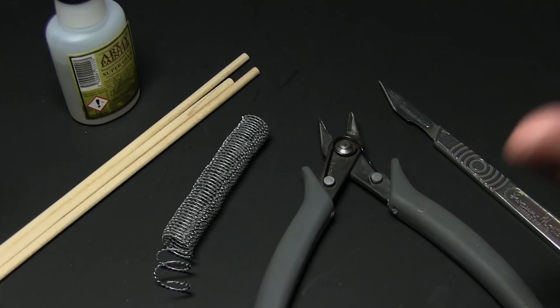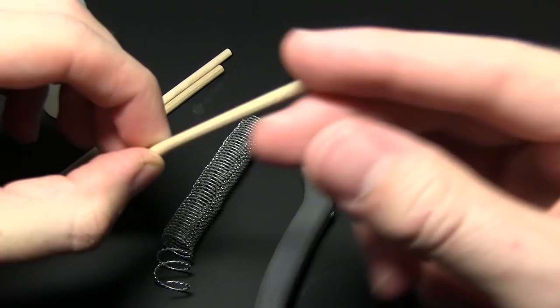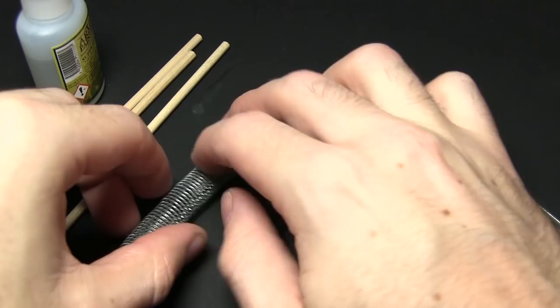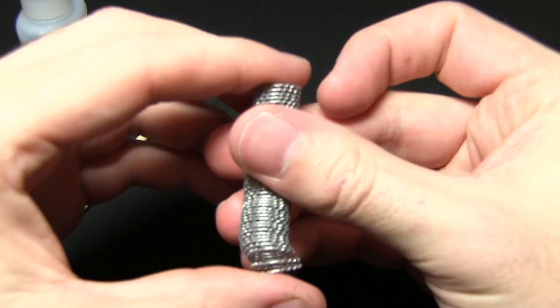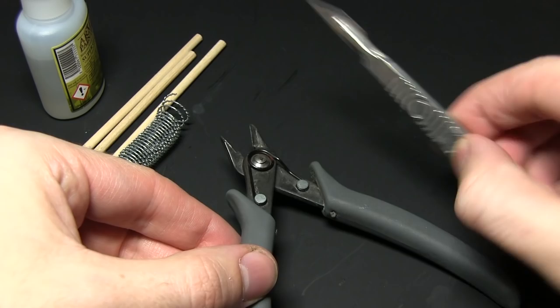For this tutorial you will need the following items: super glue, some wood dowels about 4mm in diameter, and some barbed wire, which is available from most hobby stores and wargaming websites. For the tools, you'll need some clippers and a hobby knife or similar item.